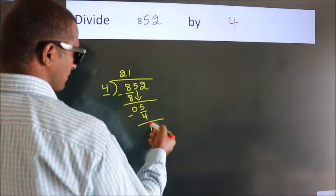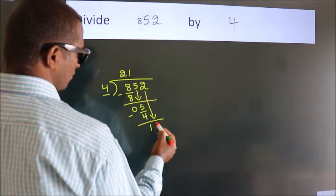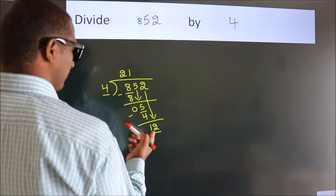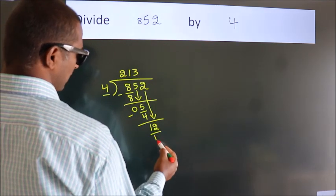After this, bring down the beside number. So, 2 down. So, 12. When do we get 12? In 4 table, 4 threes, 12.